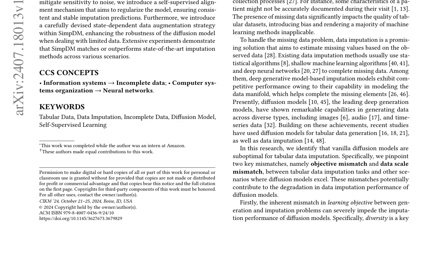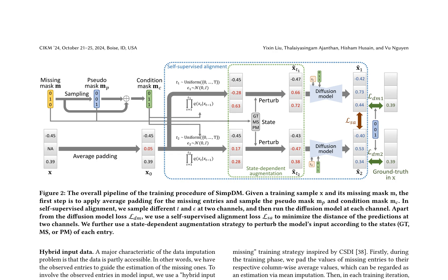The paper reviews related research directions, including tabular missing data imputation in diffusion models, highlighting the competitive performance of generative model-based approaches. SIMP-DM utilizes a simple MLP architecture with learnable embedding of diffusion steps and missing mask as input conditions to discern the status of the hybrid input.